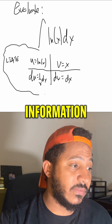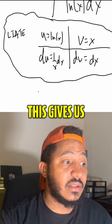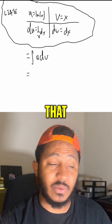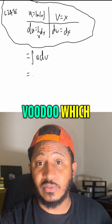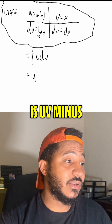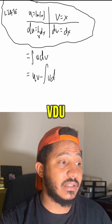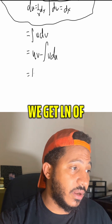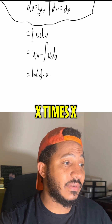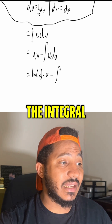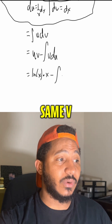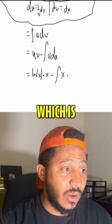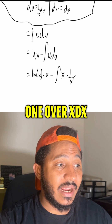Using all this information, this gives us the integral of u dv. And we know that equals ultraviolet voodoo, which is uv minus the integral of v du. In other words, we get ln of x times x minus the integral of that same v, that same x, times du, which is 1 over x dx.